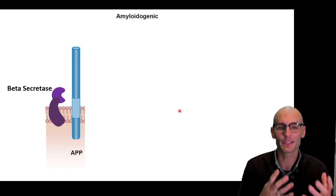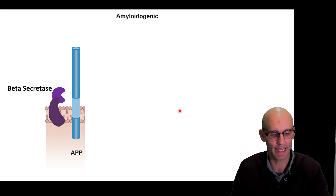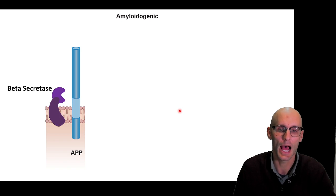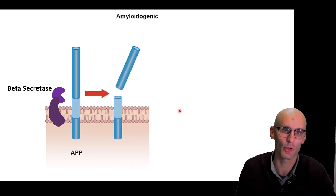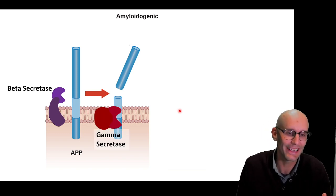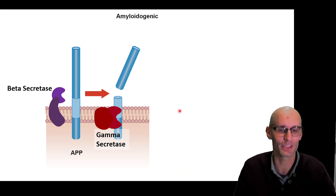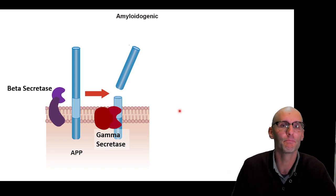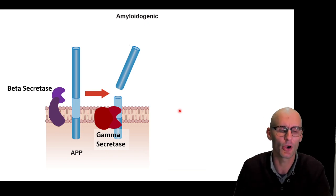Now what enzymes are cleaving this amyloid precursor protein? Well first up we have beta secretase, and it chops it just in the extracellular domain — outside the cell on the protein — so it chops off this big chunk of the amyloid precursor protein. Next we have gamma secretase. These enzymes actually sit within the membrane and have membrane-spanning domains within their complexes, and they're made up of many proteins.